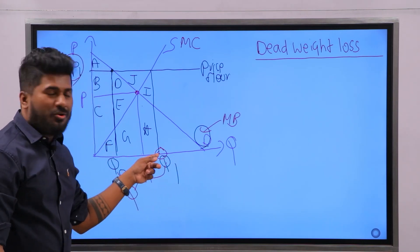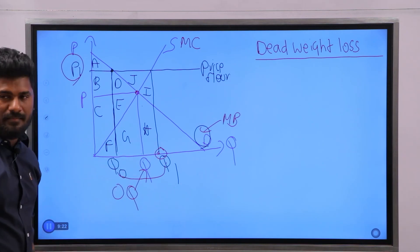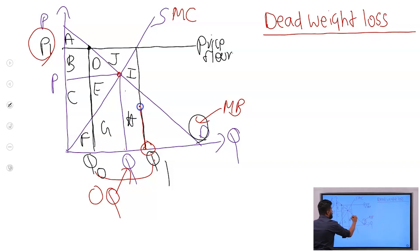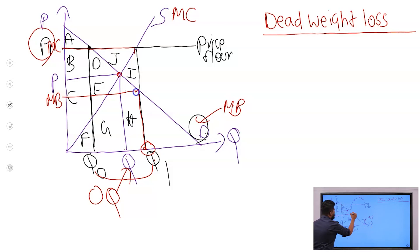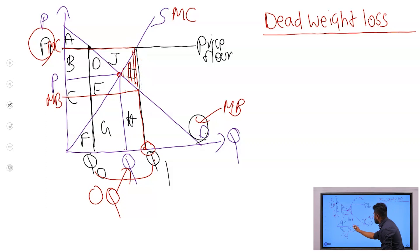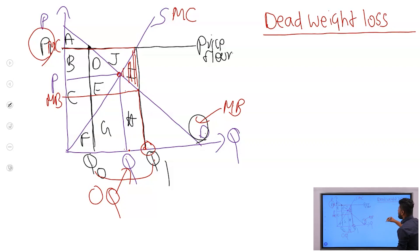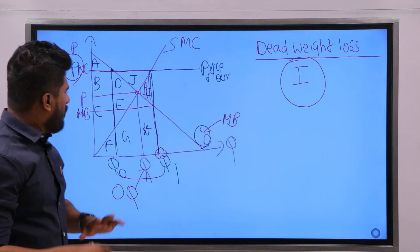We are not producing the efficient quantity. The efficient quantity is Q, but we are producing Q1. At Q1, when you meet your MB curve and your MC curve, you can see that MB and MC are not equal. Dead weight loss arises because we need to come back to the efficient output level. So the dead weight loss is this area I. Hope you understood well.